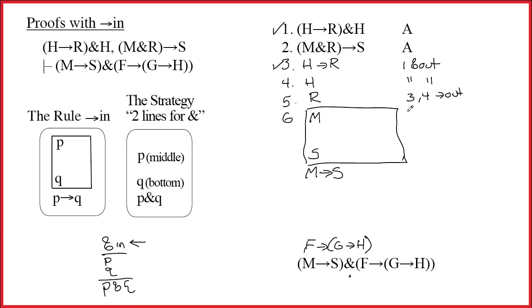So over here, what's the justification for m? Well, every box starts with a PA. That stands for provisional assumption. And, of course, we're making it for the rule arrow in, so it's good to put that in parentheses. Every time you set up a box, then you just go back up to the top and you look for things to do top down.